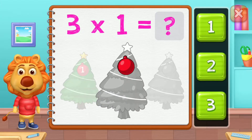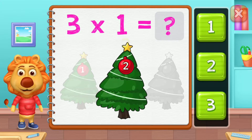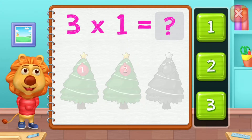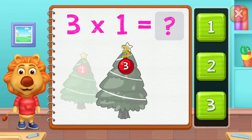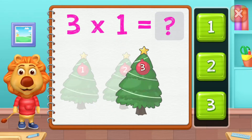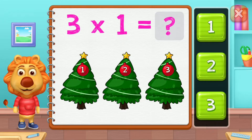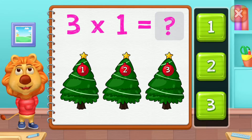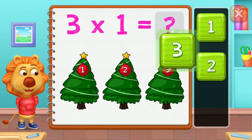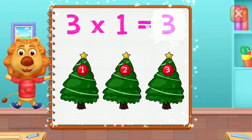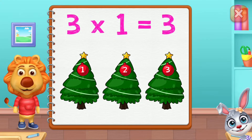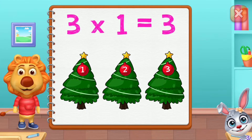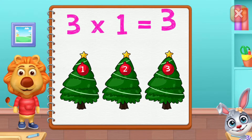One, two, three, four, five, six, seven, eight, nine, ten. Three! 3 groups of one equals three!